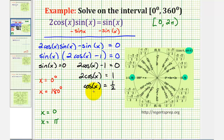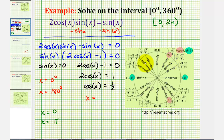Now we also want to determine where cosine x equals one-half. On the unit circle, cosine theta is equal to x. So we're looking for points on the unit circle where the x-coordinate is equal to one-half. Since the cosine function value is positive, the angles must be in either the first or fourth quadrants. x is equal to one-half at 60 degrees or pi over three radians, and also at 300 degrees or five pi over three radians. So in degrees, x equals 60 degrees or x equals 300 degrees; in radians, x equals pi over three or five pi over three.